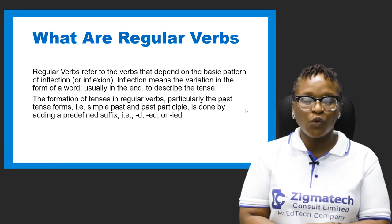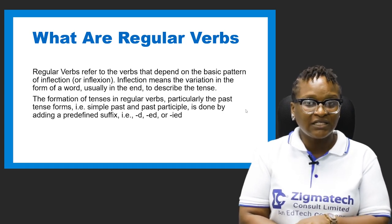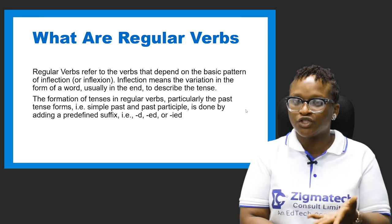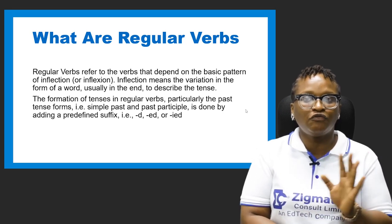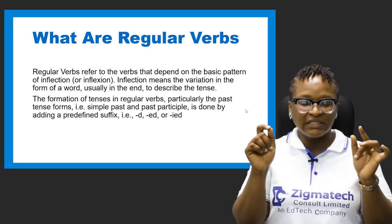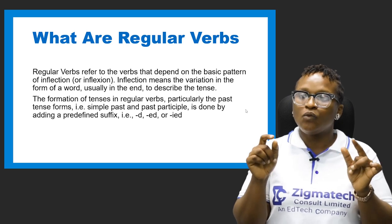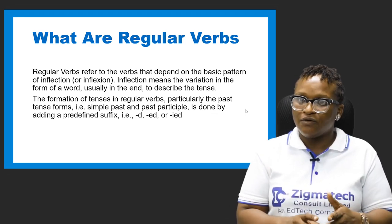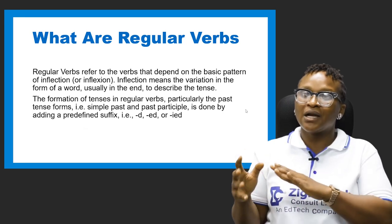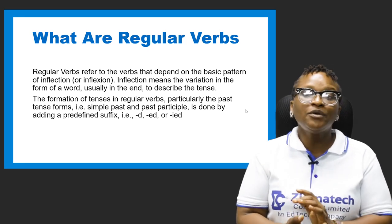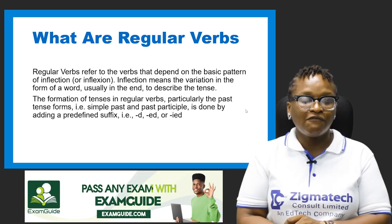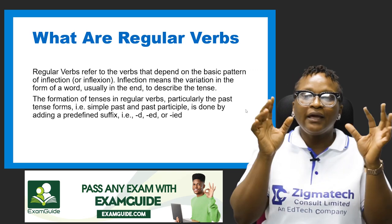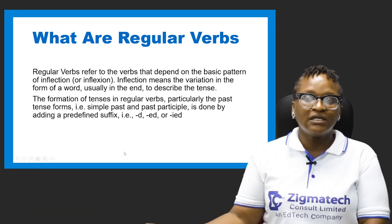What are regular verbs? Regular verbs refer to the verbs that depend on the basic pattern of inflection. Inflection means the variation in the form of a word, usually at the end, to describe the tense. We looked at this when we treated suffixes — inflections are added to word elements to change the tense. You could also add inflections to change the word class of a particular word.